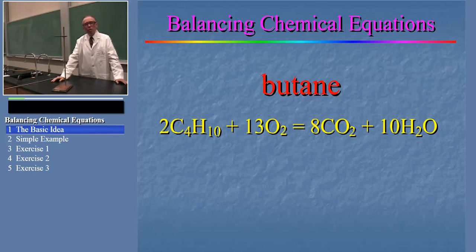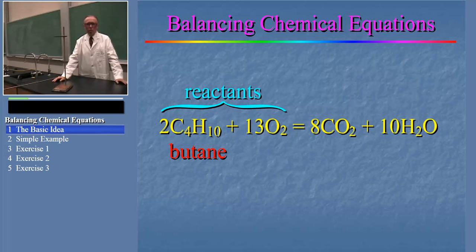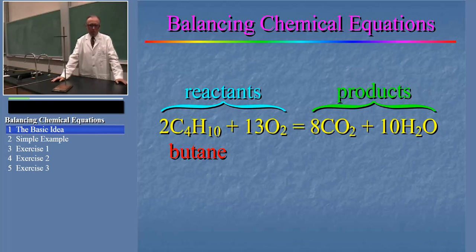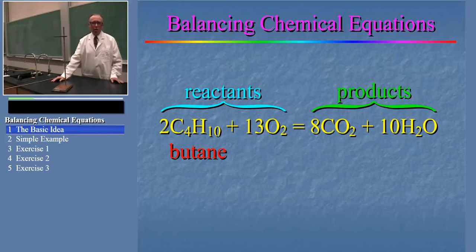The chemical species on the left, C4H10, is butane, and of course O2 is oxygen. For this reaction, these are the so-called reactants. The products of this combustion reaction are carbon dioxide and water, which you see on the right side of the equation after the equal sign. These are the so-called products.